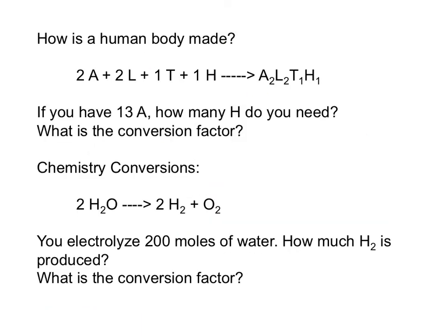Some of you have taken a biology class, so you know how human bodies are made. You take some arms, legs, torsos, and heads, put them in a pot, turn on the reactor, and out comes a human body with this chemical formula, A2L2T1H1.